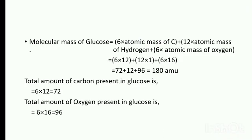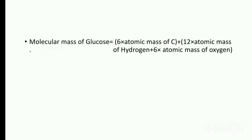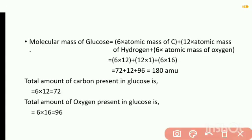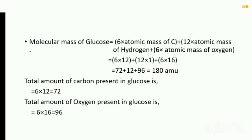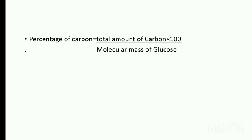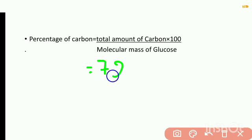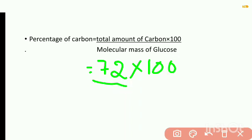To remember: the total amount of carbon is 72, the total amount of oxygen is 96, and the molecular mass of glucose is 180 atomic mass units. Now we need to find out the percentage of carbon. Percentage of carbon equals total amount of carbon, which we know is 72, into 100, divided by molecular mass of glucose, which is 180.